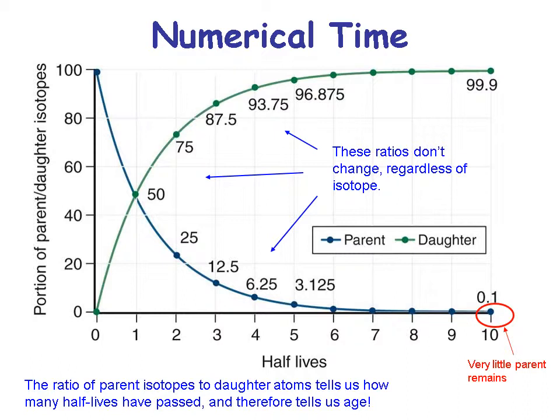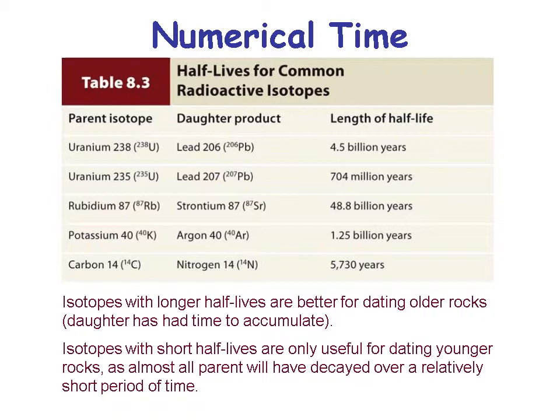Carbon-14 is useful only for recent archaeology or recent geology — less than about 50,000 years. Notice the half-life of uranium-238 is about the same age as the Earth — much, much longer than carbon-14. Uranium-235 or potassium-40 would both be good for dating rocks and examining how old the Earth is.